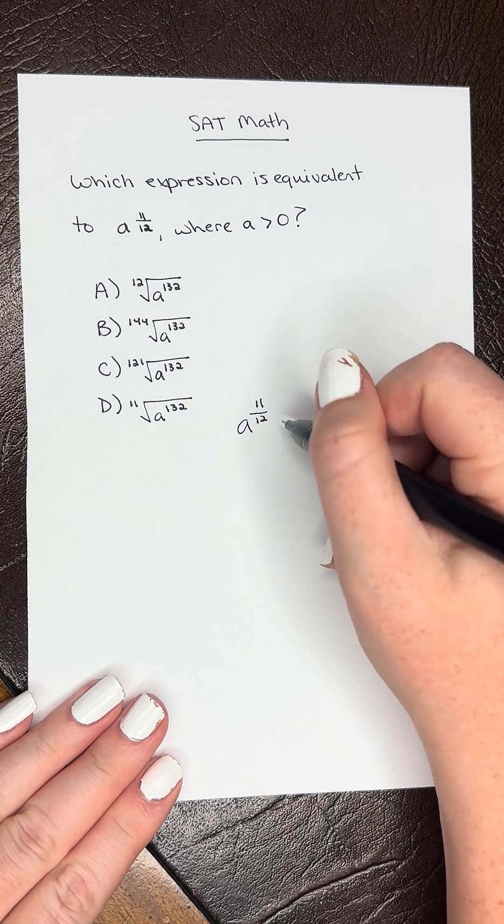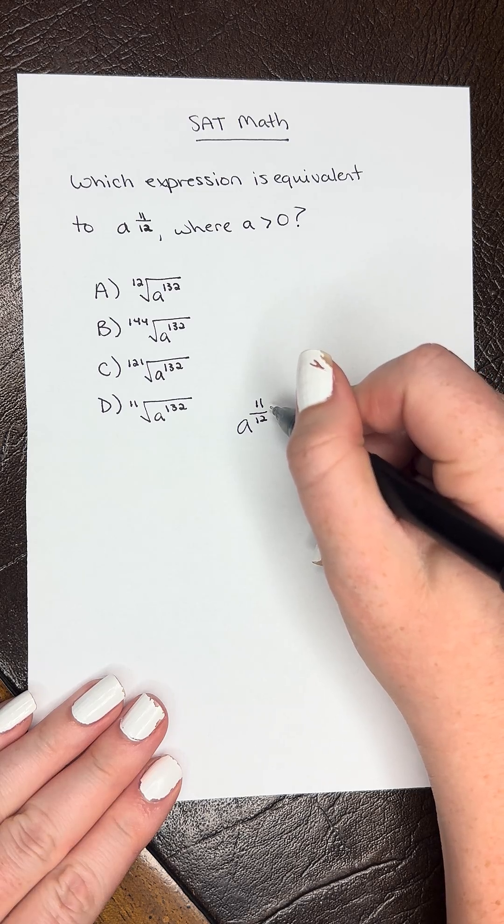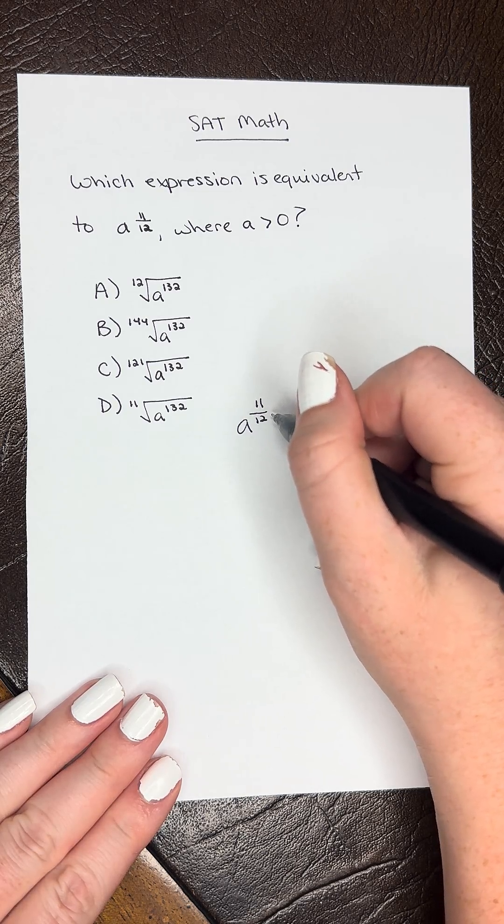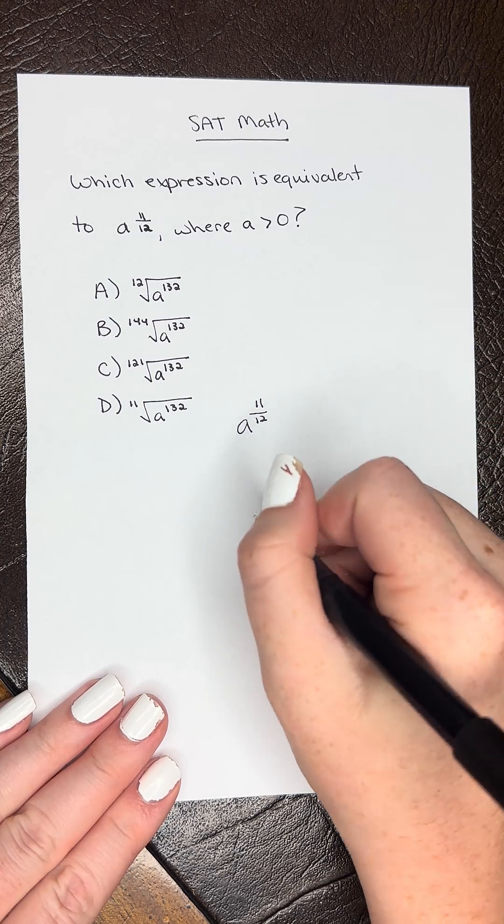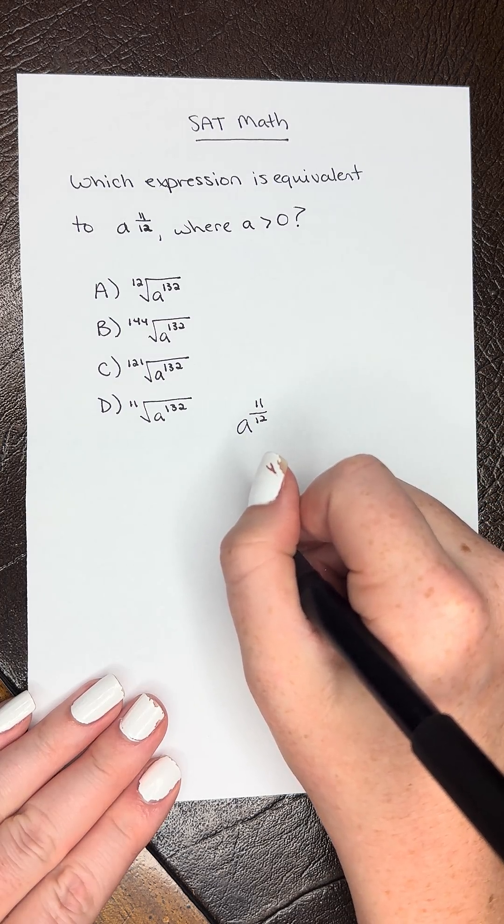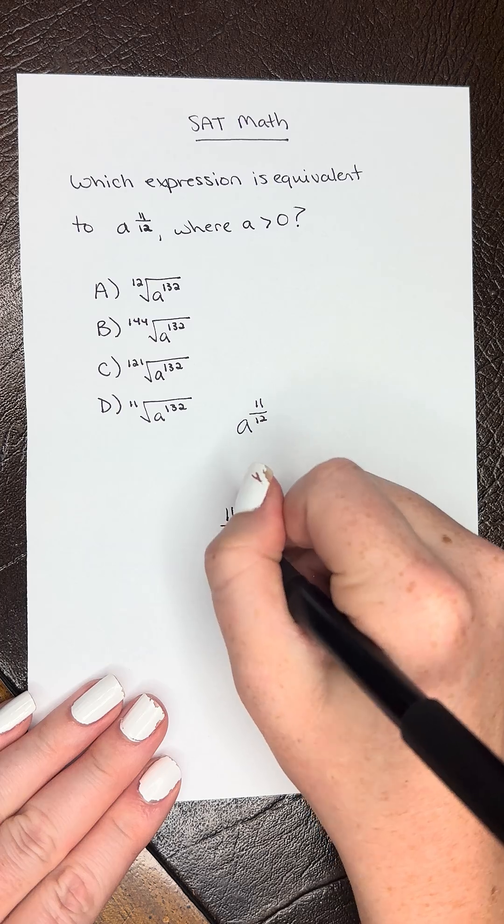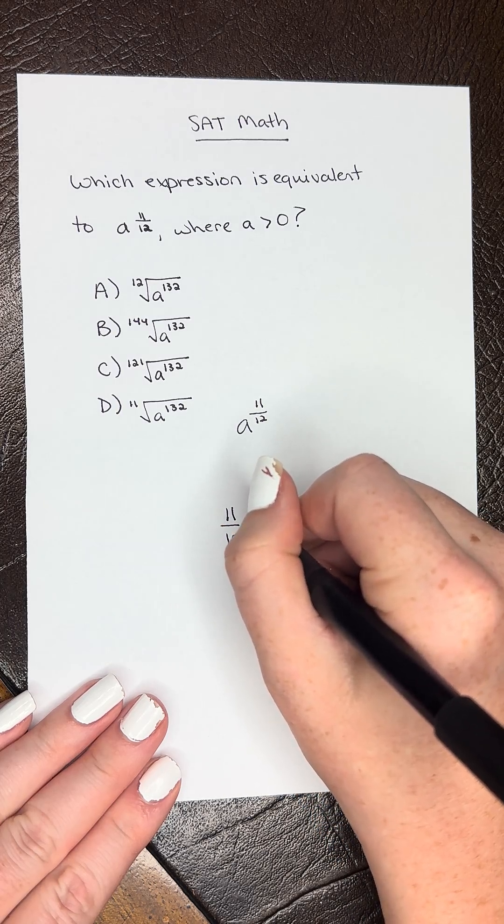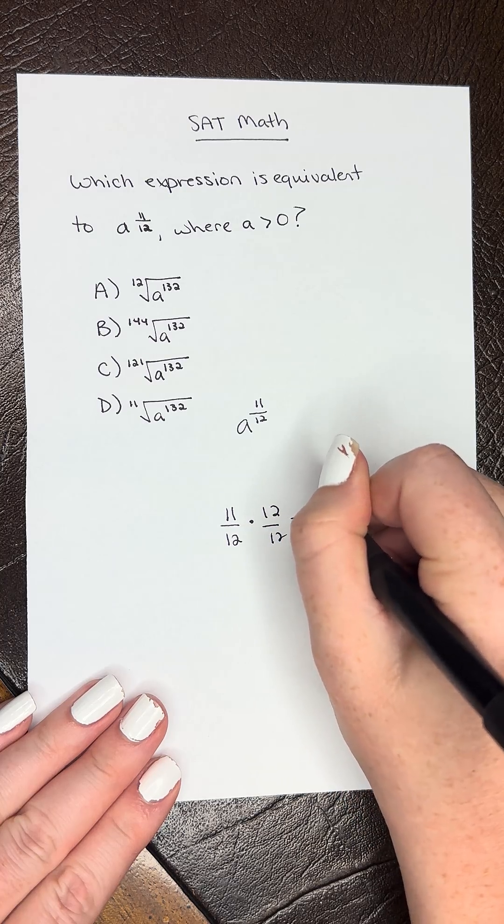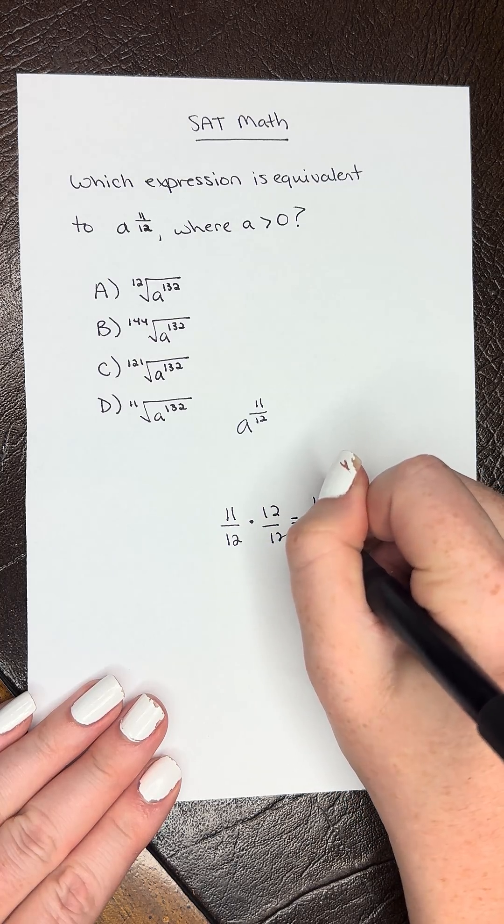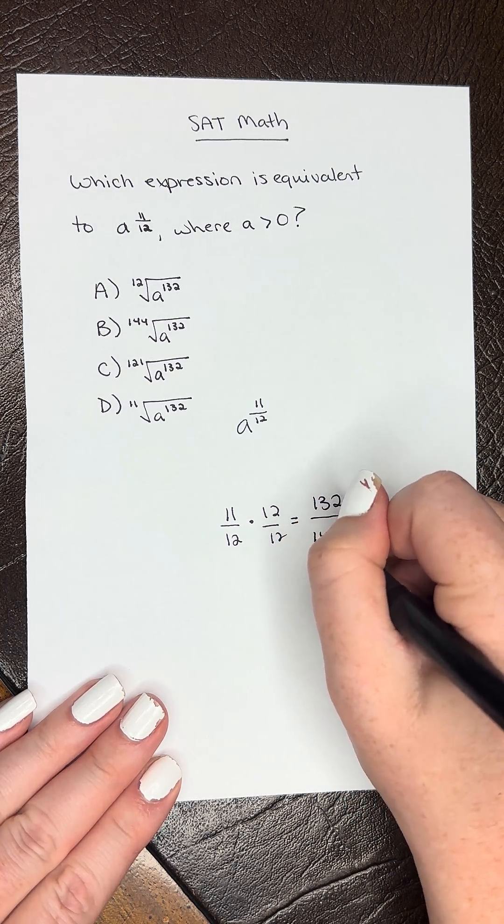So what we need to think about in this case is multiplying both the numerator and the denominator by the same number here. We look at that exponent 11 over 12. And if we were to multiply both the top and the bottom by 12, we would get 132 over 144.